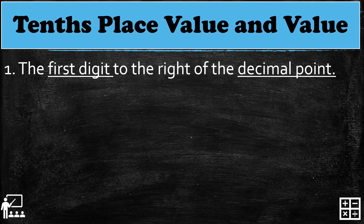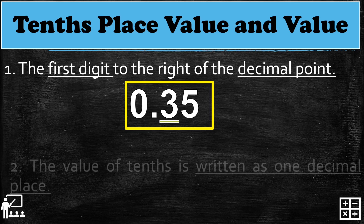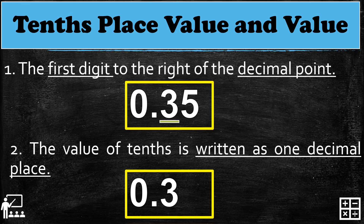The tenths place value is the first digit to the right of the decimal point. In the example 0.35, the underlined number 3 is in the tenths place because it is the first digit to the right of the decimal point. The value of the tenths place is written as one decimal place, so the value here is 0.3.